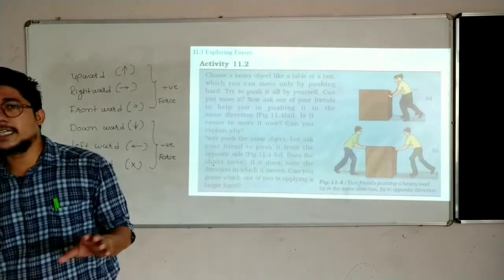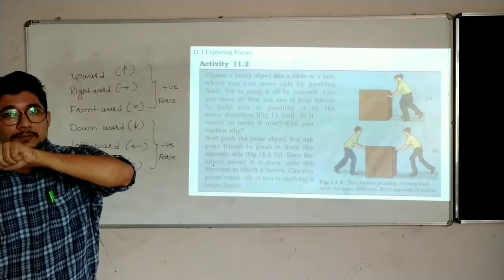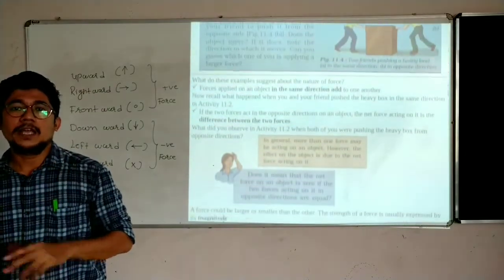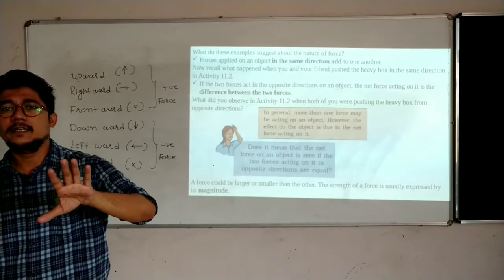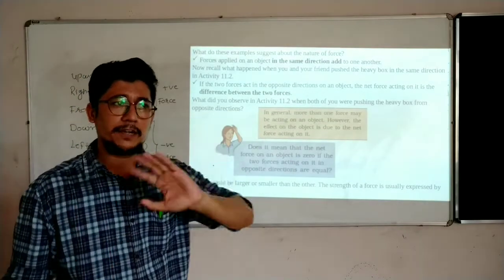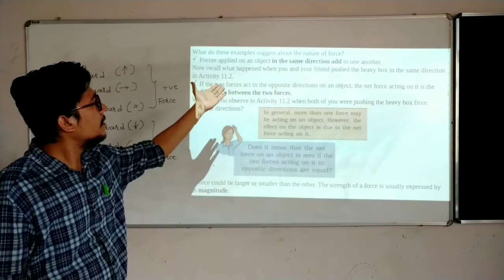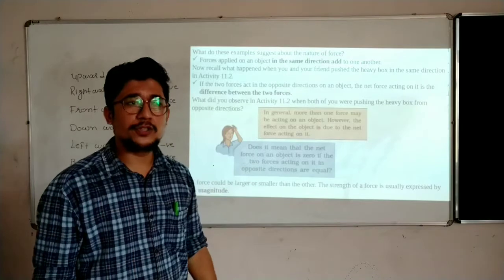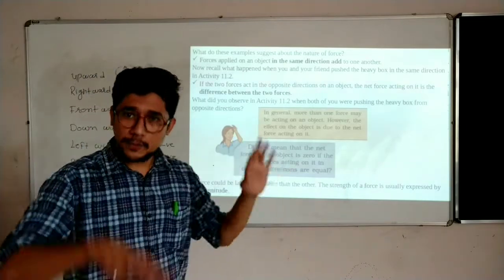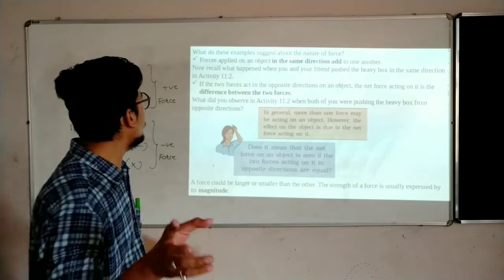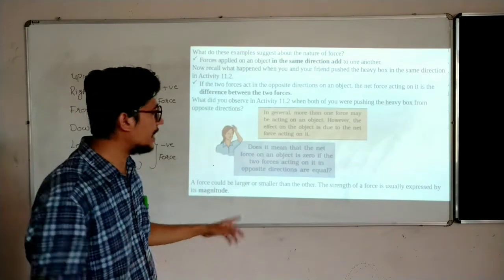We have discussed 6 types of directions. Which are positive? Upward, rightward, and frontward are positive. Which are negative? Leftward, downward, and backward are negative. After adding or subtracting, the answer you get will tell you the direction. If forces are applied in the same direction, they add. If forces are in opposite directions, they subtract.